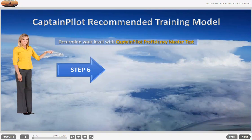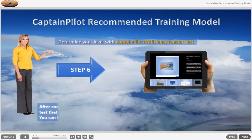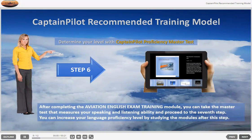Step 6: Determine your level with Captain Pilot's Proficiency Master Test. After completing the Aviation English Exam Training Module, you can take the Master Test that measures your speaking and listening ability and proceed to the seventh step. You can increase your language proficiency level by studying the modules after this step.